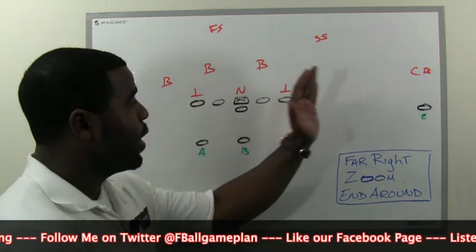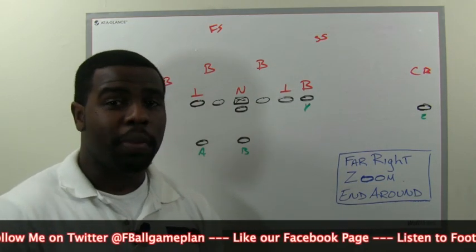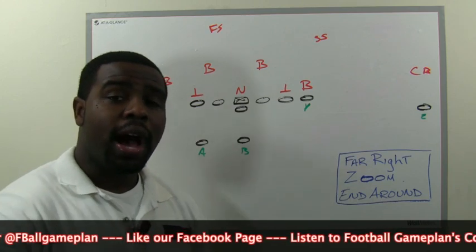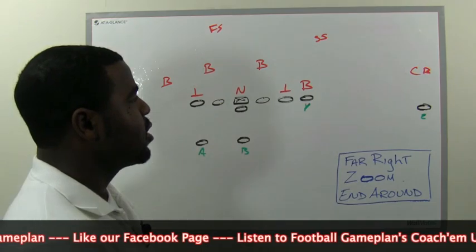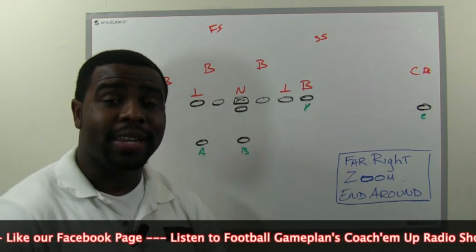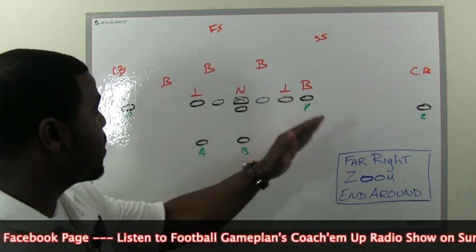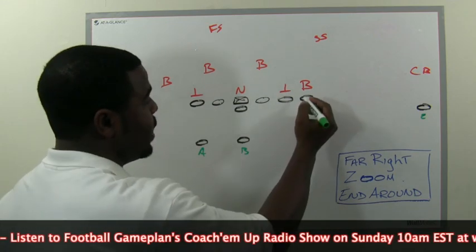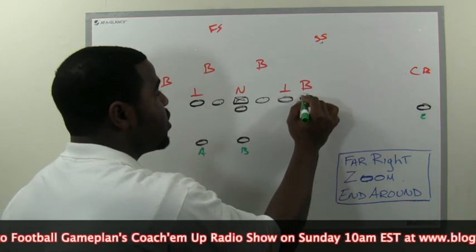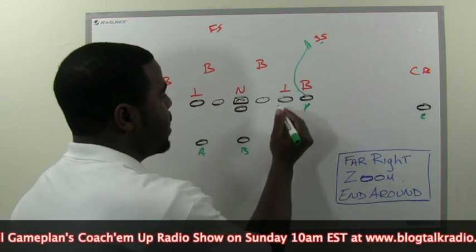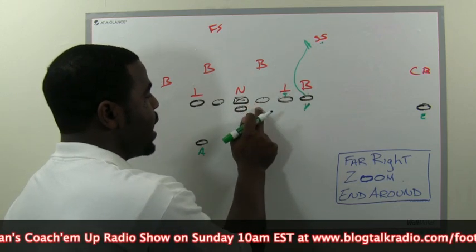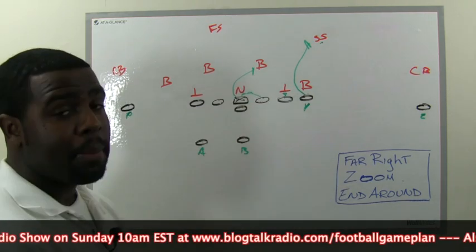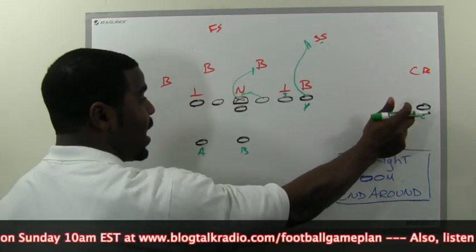Here's how we're going to block it — against a 50 front. Defensive coordinators can draw up any type of stunts, blitzes, different coverages to defend this, so this is not attacking a certain coverage. This is showing you how to sequence your play against a base formation. We want the tight end to attack and stalk the strong safety. Big on big, tackle on tackle. We want the backside guard and center to combo on the nose tackle, with the center moving up to the Mike backer so he doesn't scrape over and kill the play in the hole.